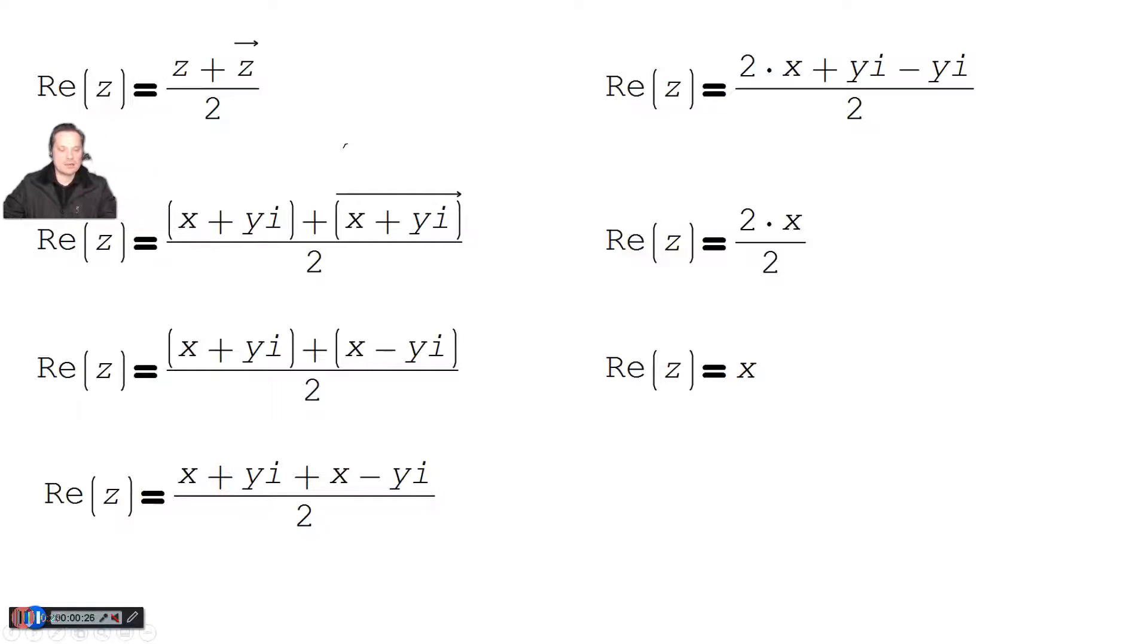First, let's take a look at it mathematically. So we have the real part is z plus z bar over 2. You can replace z with x plus yi, and you can replace z bar with x plus yi with that bar above it. I know it looks like an arrow, but it's meant to be a bar. And then there's a 2 on the bottom.